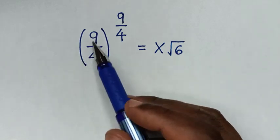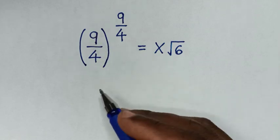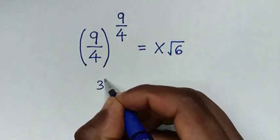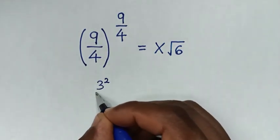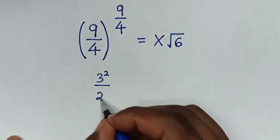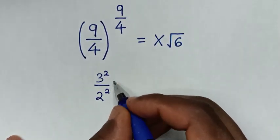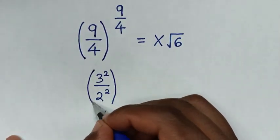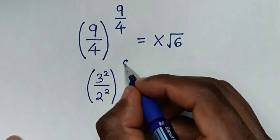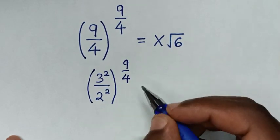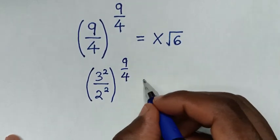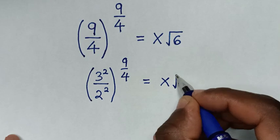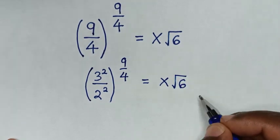Now from this base of 9 over 4, 9 is the same as 3 squared, and 4 is the same as 2 squared. So we rewrite it as (3² / 2²) bracket power of 9 over 4, which will be equal to x square root of 6.